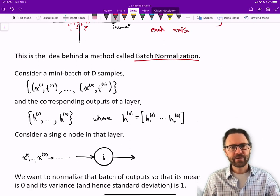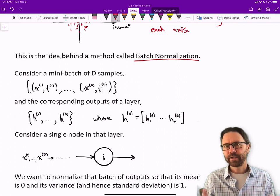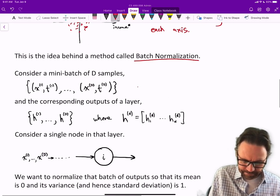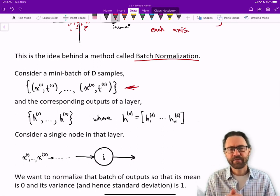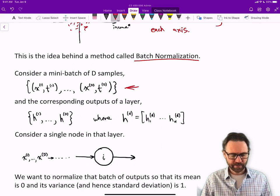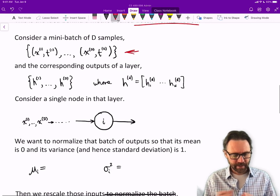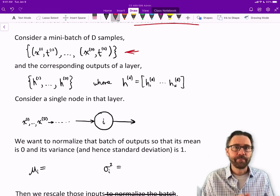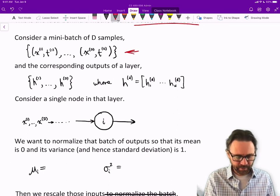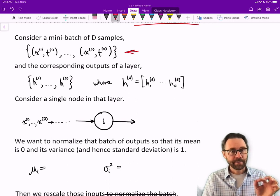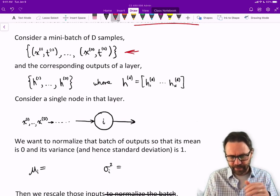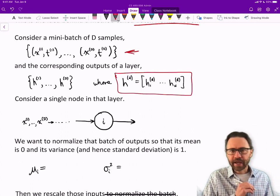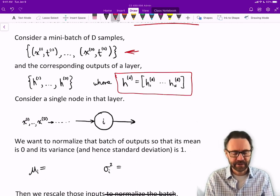Now let's talk about the batch normalization method for training neural networks. Consider a mini-batch of D samples—I've got x as the input and t as the target shown in tuples: (x1, t1) up to (xD, tD). And the corresponding outputs of a particular layer: if we feed all those inputs into our network and look at a particular hidden layer, that layer will have activations h1 up to hD. Since it's a hidden layer made up of multiple hidden nodes, h superscript d is actually a vector of different activities.